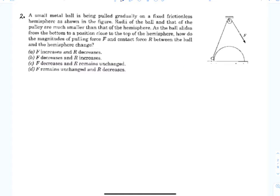In this problem, a small metal ball is being pulled gradually on a frictionless hemisphere as shown. Radii of the ball and that of the pulley are much smaller, so the ball is almost a point mass. How do the magnitude of the pulling force and contact force between the ball and the hemisphere change?